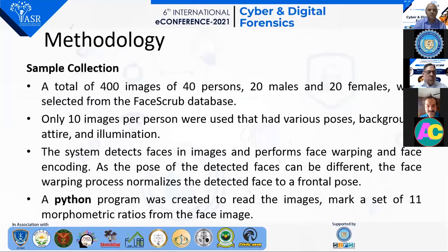The system detects faces in images and performs face wrapping. We created our own algorithm based on HOG — histogram of oriented gradients. This algorithm detects faces in the image, performs face wrapping and face encoding. Since the pose of the detected face can be different, the face wrapping process normalizes the face from side to front.